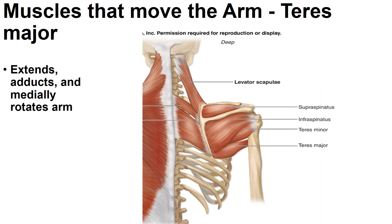The teres major is a deep muscle with the actions of extension, adduction, and medial rotation of the arm, making it a synergistic muscle to the latissimus dorsi. You'll notice there is a major and a minor — the only difference is size. A major muscle is larger in size compared to the minor muscle, which is smaller.